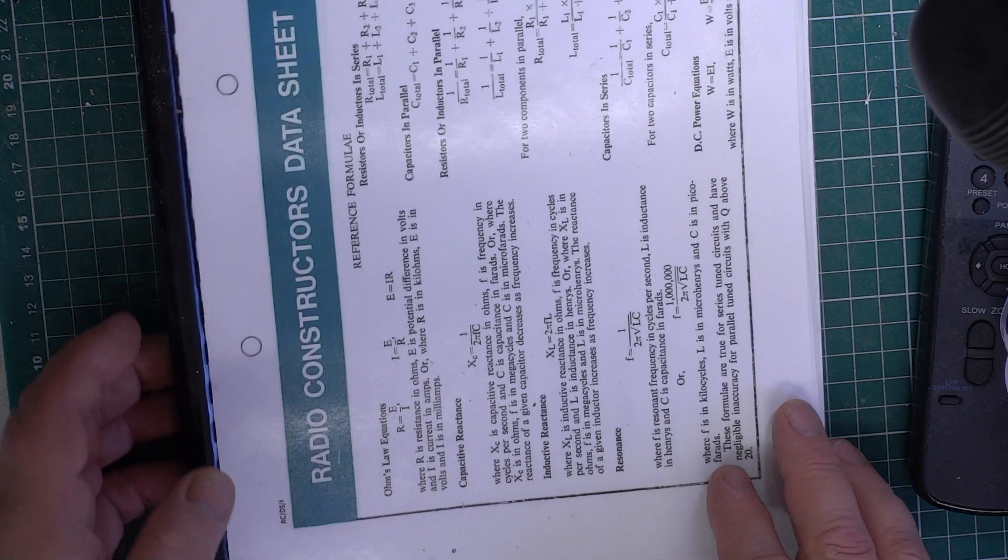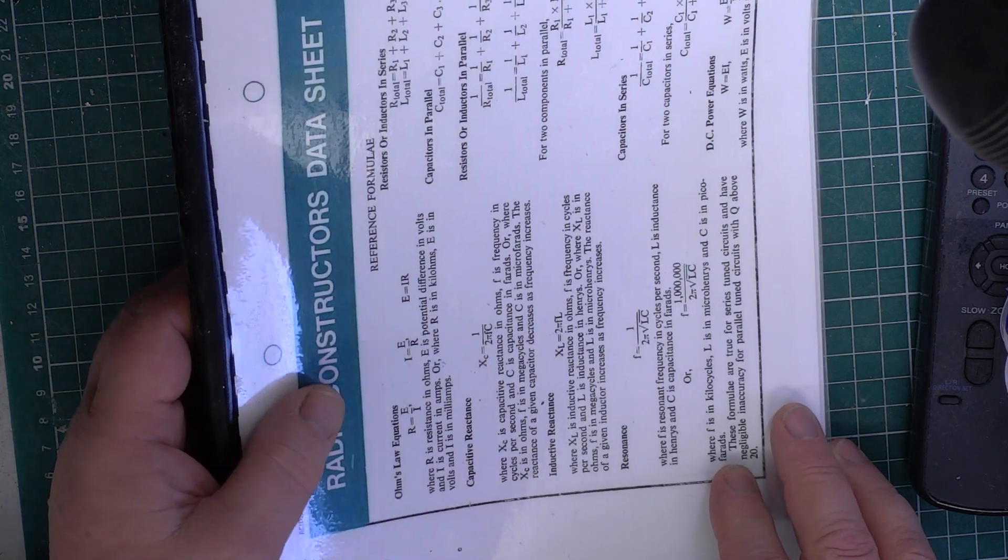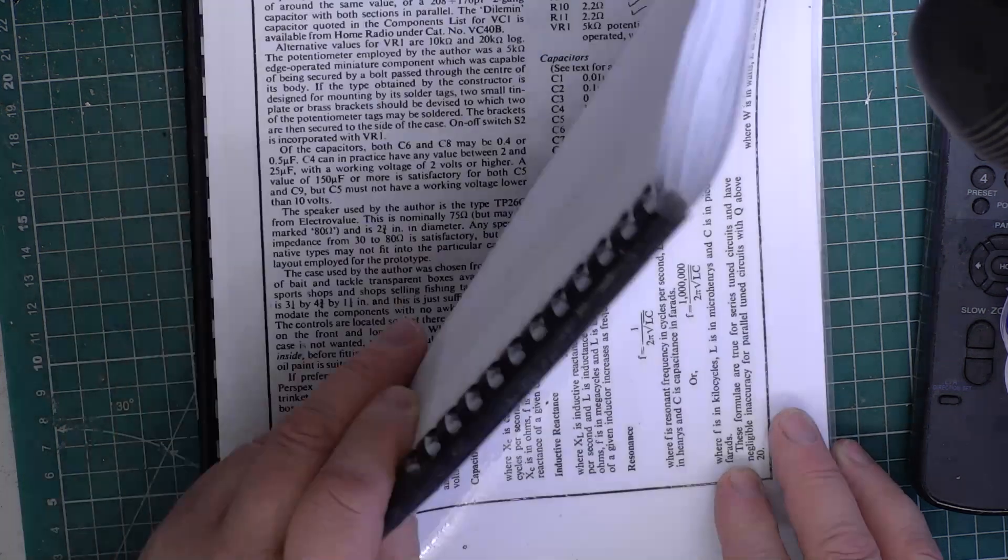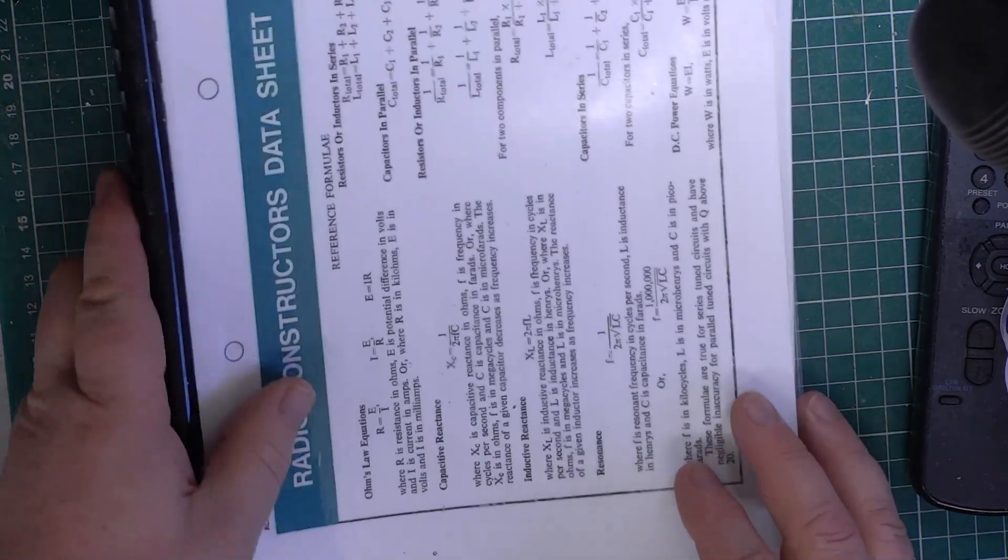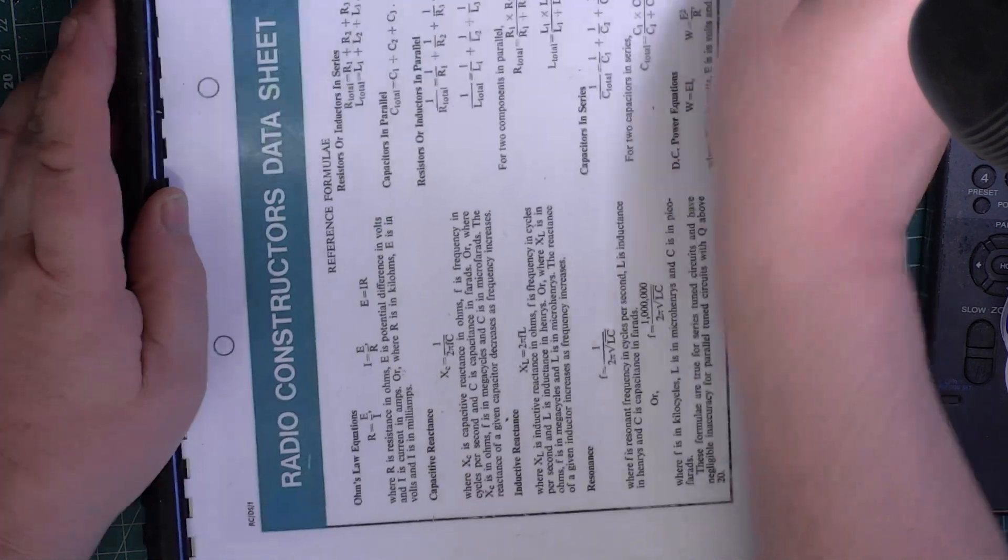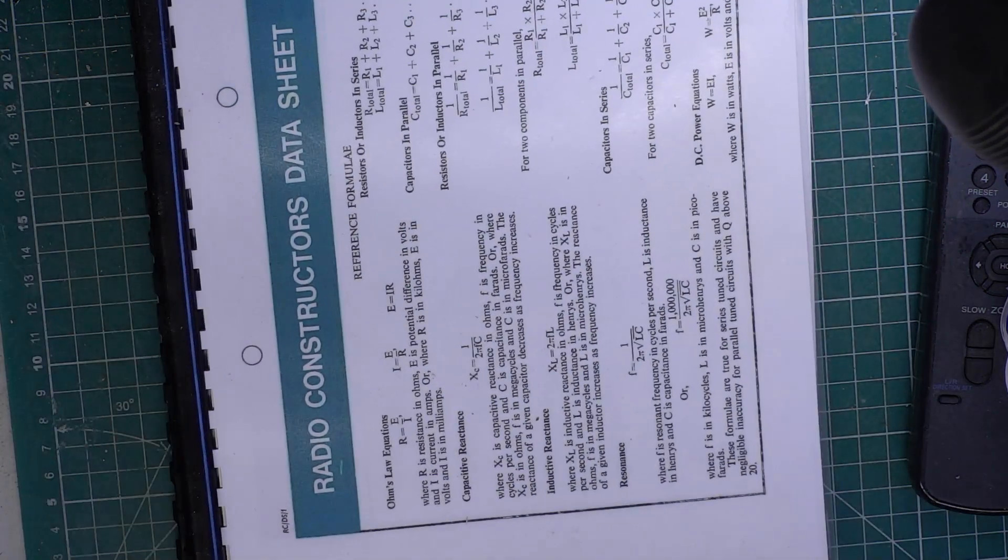So there we have it. The Radio and Electronics Constructor Magazine Data Sheets discussion. And I say they started in 1968 and went through to the early 80s, if I remember correctly. Thanks for watching.